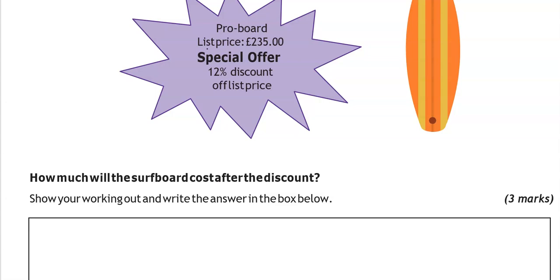So the price is £235 but we've got a 12% discount. Since we can't use a calculator, we'll use the 10% method. So we'll work out 10% of £235, which can be worked out by dividing £235 by 10, which means moving the decimal point one place to the left. So we get £23.50.